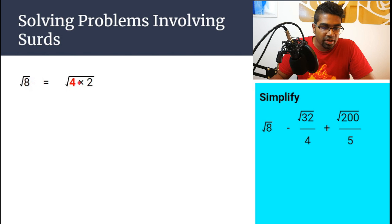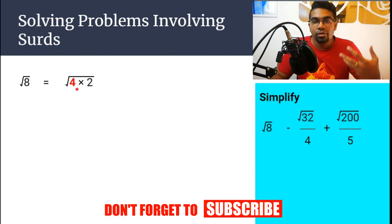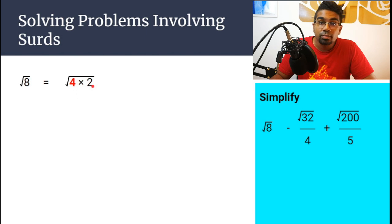So here 4 is the perfect square. The square root of a perfect square will give us a whole number. So for example, the square root of 4 is 2, and therefore, 4 is a perfect square. So here we can write it as 4 times 2.